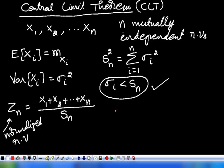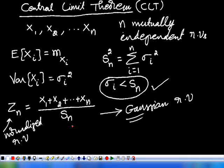So, this Zn tends to a Gaussian random variable. The central limit theorem says that the sum of N random variables tends to a Gaussian random variable. This is one way of defining the central limit theorem. Strictly speaking, there are many definitions for the central limit theorem based on the various constraints.